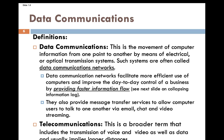Data communication networks improve day-to-day control of business by providing faster information flow. For example, in a bank, if a customer walks to your desk and you need information from another desk, getting up each time slows activity. But with a network, you can send a quick email and get a response immediately — communicating and getting information in a much faster manner.